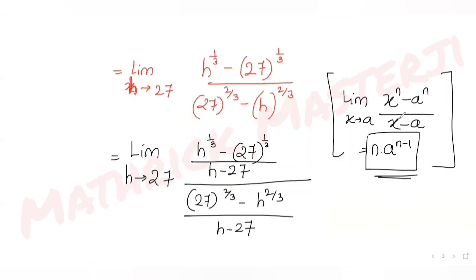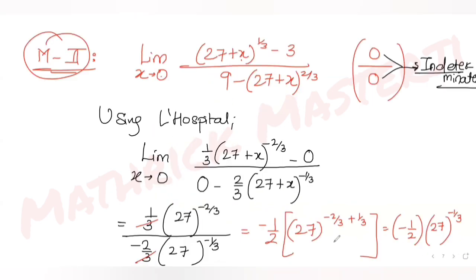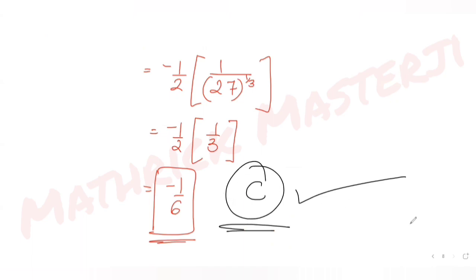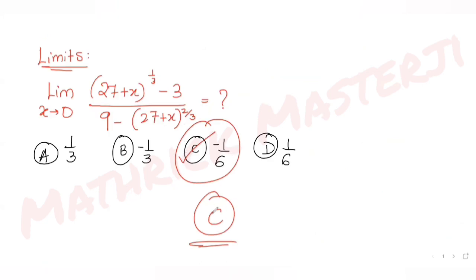To summarize: in the first method, I converted the limit into the standard form and applied the formula to get option C. In the second method, I identified the 0/0 indeterminate form, applied L'Hôpital's rule by differentiating numerator and denominator separately, and again obtained option C. Use whichever method you're comfortable with in the exam.